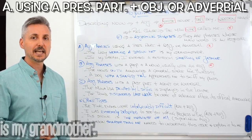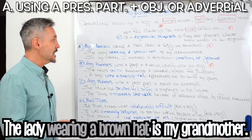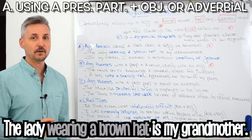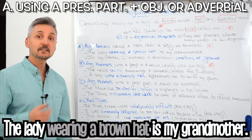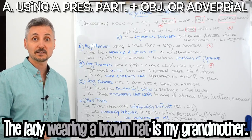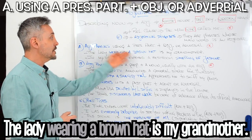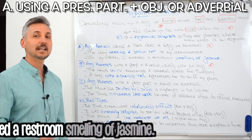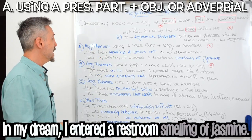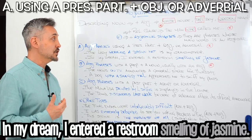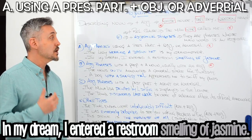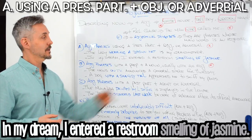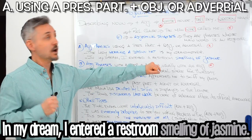If you don't know what a present participle is, you may click here to watch that lesson. Let's take a look at the introductory example: The lady wearing a brown hat is my grandmother. Which lady? The lady wearing the brown hat — so, wearing the brown hat describes the lady.